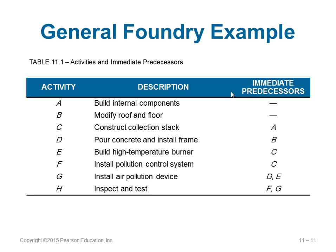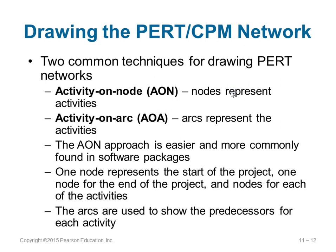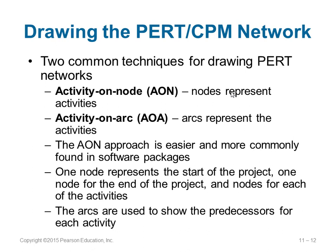Activities A and B can start immediately because they do not depend on anything else. To start activity C, you must have completed A; to start D, you must have completed B; and so on. When drawing the PERT/CPM network, there are two types: Activity on Arc (AOA) and Activity on Node (AON). AON is normally followed because it is easier to draw. In the network diagram, A and B have no predecessors; C depends on A, D depends on B, G depends on E and D, H depends on F and G, and E depends on C.